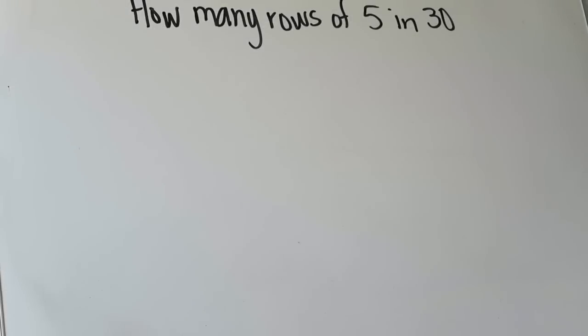So I am going to set up my board, get you guys some examples, and then come back with some closing thoughts, and then that will be it for this video. All right, so let's get started with our first example. In our first example, we are asked how many rows of five are we going to be able to create if we have a total of 30 counters.